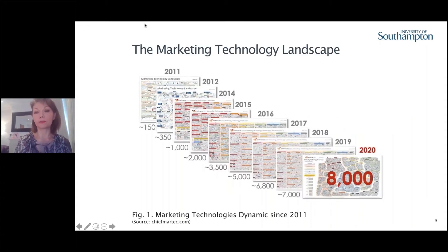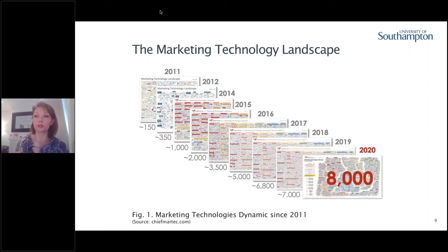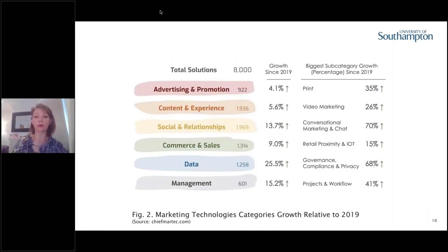Let's look at the present marketing technology landscape. You can see this amazing transition and dynamic from 2011 until 2020. We started using technologies to support our marketing efforts from around 150 platforms and we've grown today to more than 8,000 platforms. These platforms are mainly technical solutions that support our subdomains.